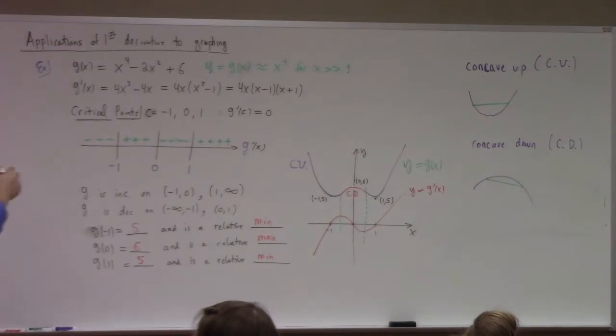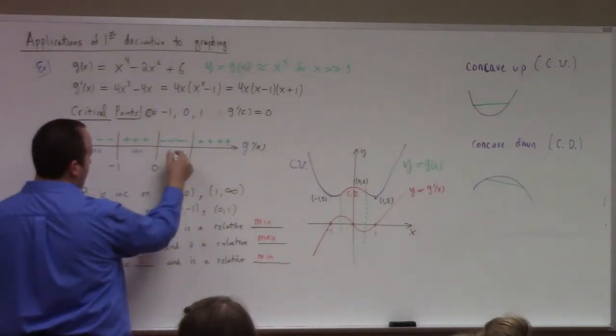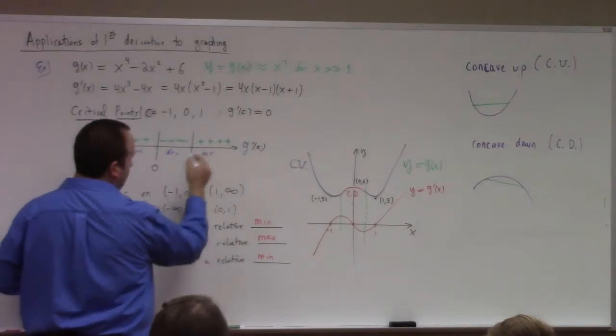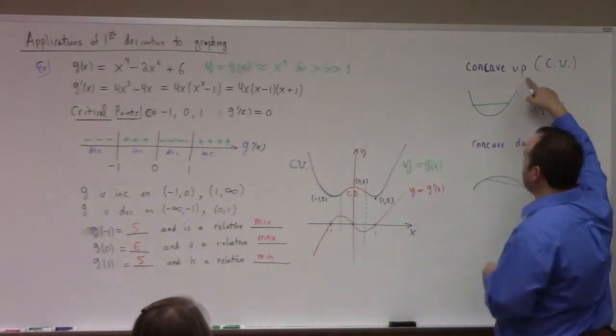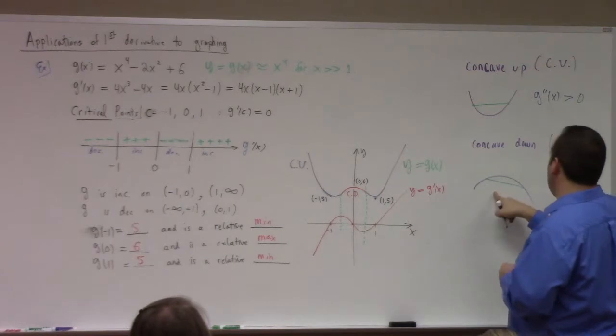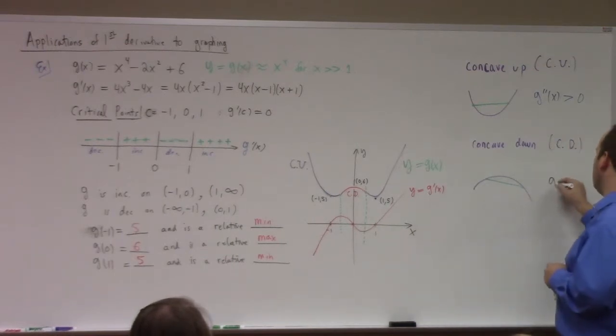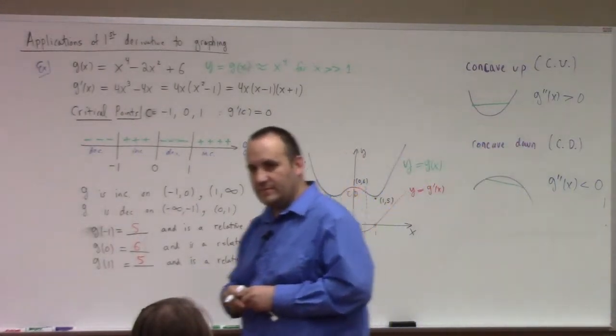Just like this one told me decreasing, increasing, decreasing, increasing. So the calculus test for concave up is that G prime prime of X is greater than 0. The calculus test for concave down is G prime prime of X is less than 0. Simple as that.